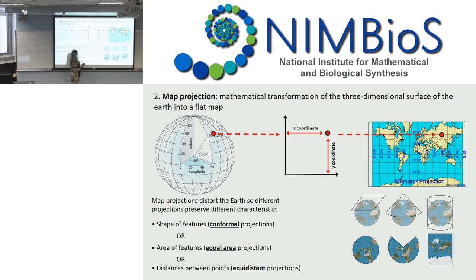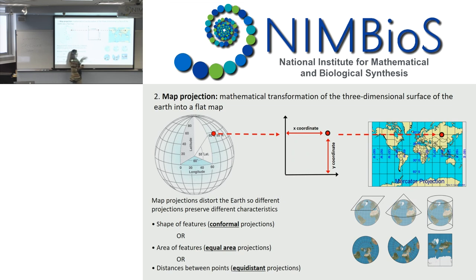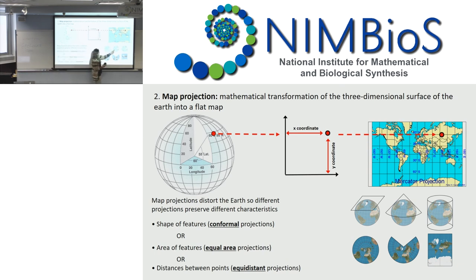Map projections work like a light source inside the Earth shining out onto a flat surface — either a plane, a cone, or a cylinder — and how the light projects onto that surface becomes our map projection. Where the Earth is tangent to those shapes, you have the highest quality — exactly the same shape and size. But as you move away, it gets distorted. Think of puppet shadow figures: close to the light you can make bunnies and butterflies, but as you move away it becomes an unrecognizable amoeba.